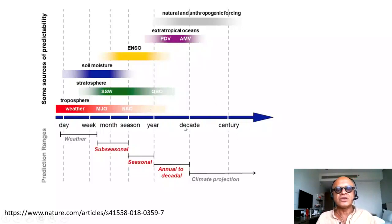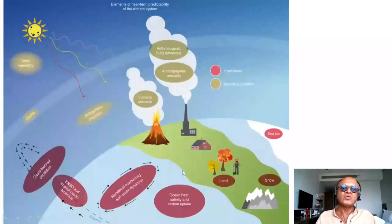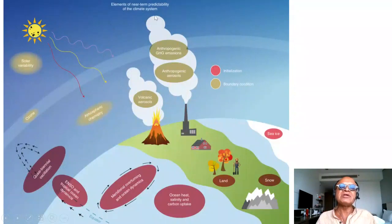The prediction ranges go from days to weeks for weather; sub-seasonal is weeks to a season; then you have seasonal, decadal, and climate projections. Once you have an idea of the predictability, you can look at elements of near-term predictability.